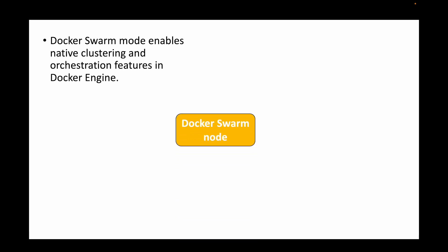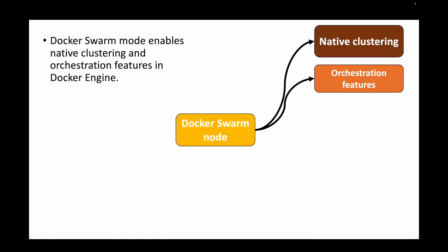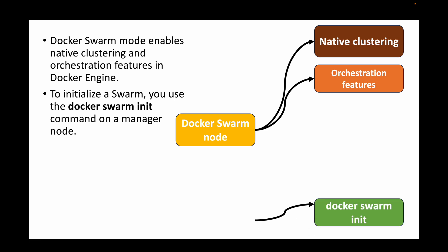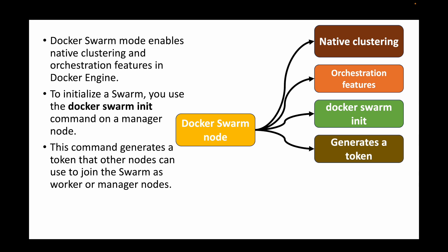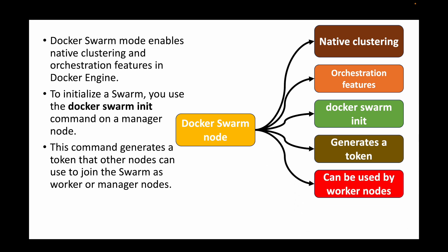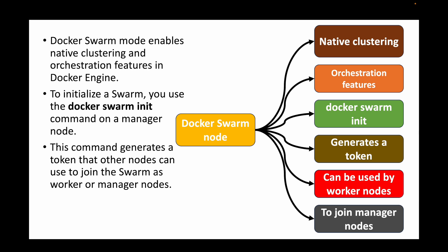The next question is: what is Docker Swarm mode and how do you initialize a swarm? Docker Swarm mode enables native clustering and orchestration features in the Docker engine. To initialize a swarm, you run the command docker swarm init on your manager node. You decide which machine will be your manager, run the command on it, which generates a token. You then take that token to the worker nodes and execute the join command, allowing the worker nodes to join the manager and form the Docker Swarm cluster.